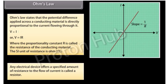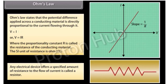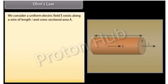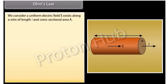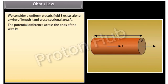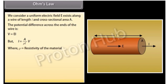Any electrical device that offers a specified amount of resistance to the flow of current is called a resistor. Consider a uniform electric field E existing along a wire of length L and cross-sectional area A. The potential difference across the ends of the wire is given by V = EL, and I = (A/ρL) × V, where ρ is the resistivity of the material.